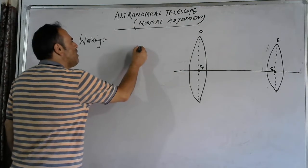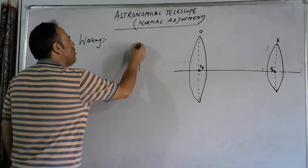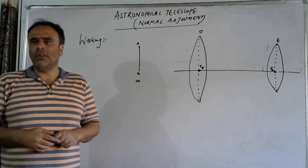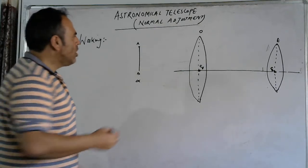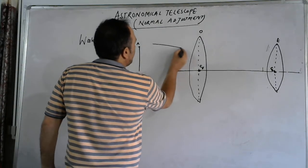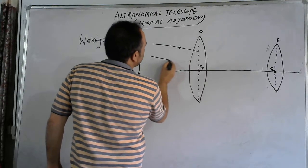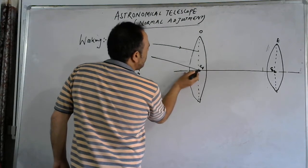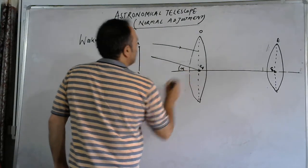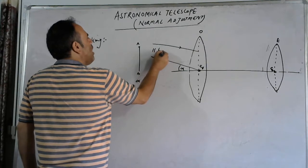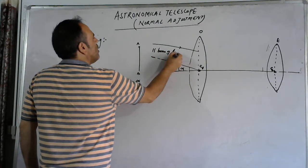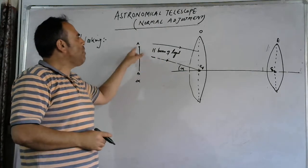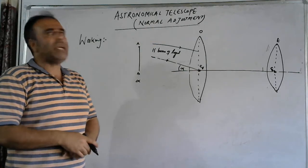Suppose A, B is our distant object — say a star — which lies at infinity. From this object, a parallel beam of light emerges. We will allow this parallel beam of light to fall on the objective at a certain angle alpha. This is the parallel beam of light coming from object A, B which is at infinity, falling on the objective at some angle alpha.